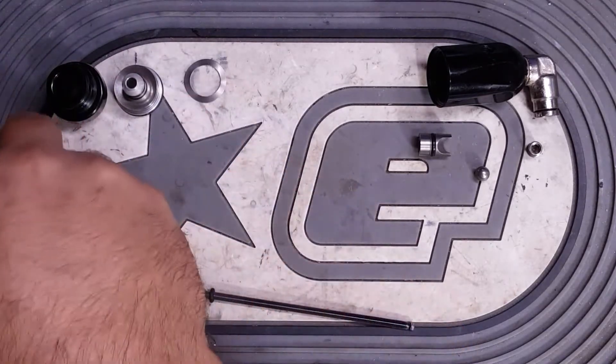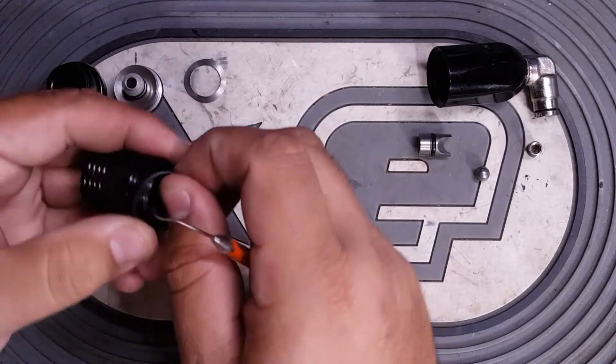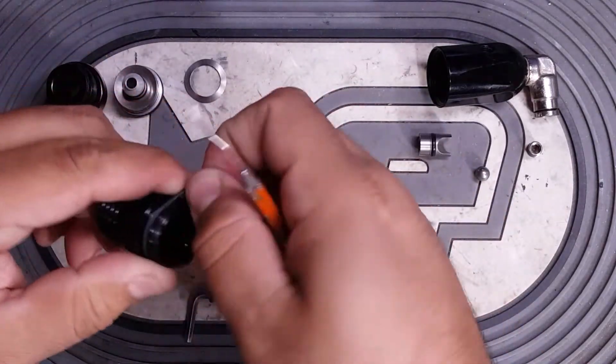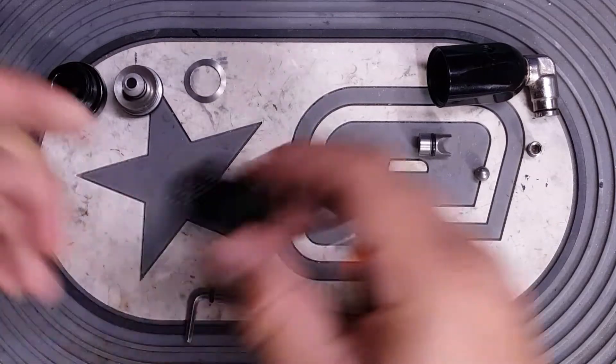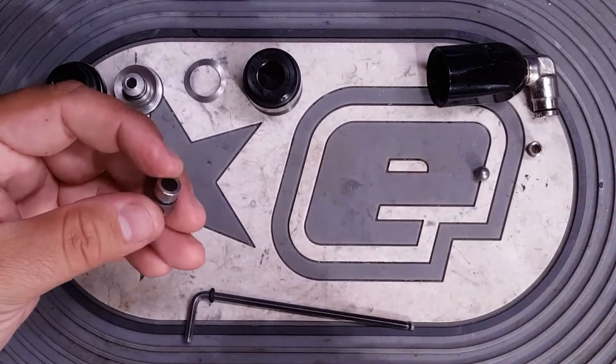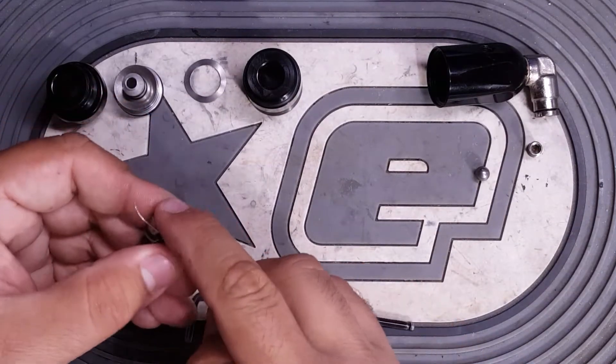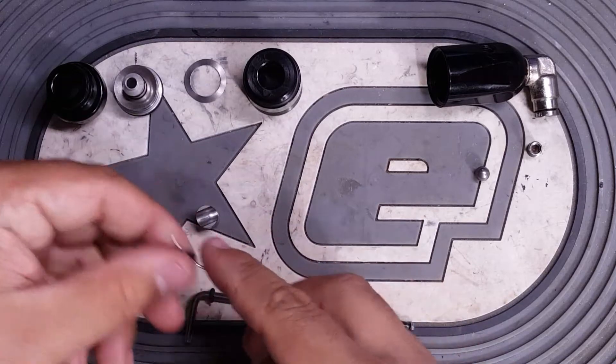Move on to the lower section. Again, this outside O-ring very rarely gets replaced, but it is a 018. And then the O-ring on the reg seat housing here, which also very rarely gets replaced. This is another number 10.